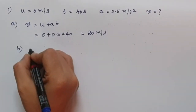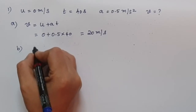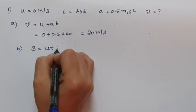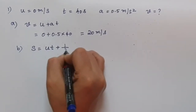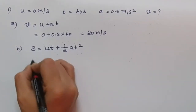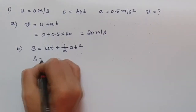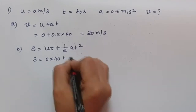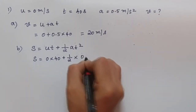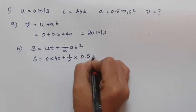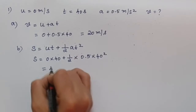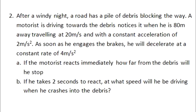For part b, we have to calculate the distance travelled using s = ut + ½at². Substituting: s = 0 × 40 + ½ × 0.5 × 40², which gives us 400 m.